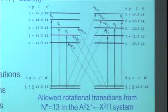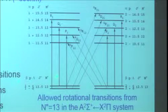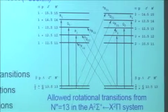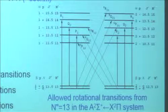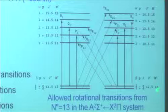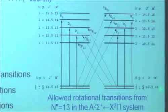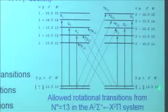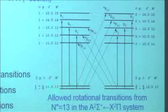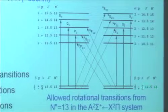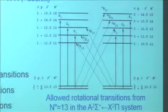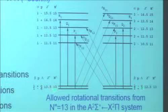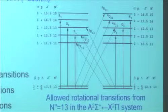We have to worry about multiple quantum numbers. Imagining we're down in the lower electronic state where N is 13 — what are the allowed values of J? J can be either 13 plus a half or 13 minus a half, so there are two values of J. Or for a given value of J, there are two values of N. That's this splitting that we worry about.